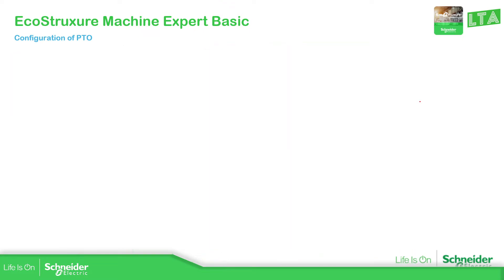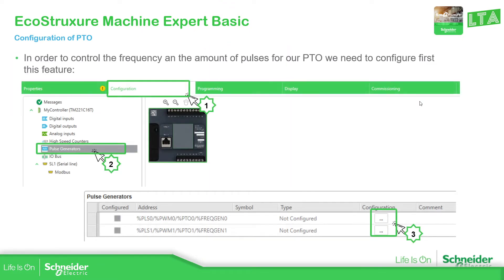To configure the PTOs, we just need to go to the configuration tab at the top. Then it depends on the controller that you have, because if you want to use the PTO, it's important that we have transistor output. Otherwise it's not going to work, and this option is not going to be enabled.